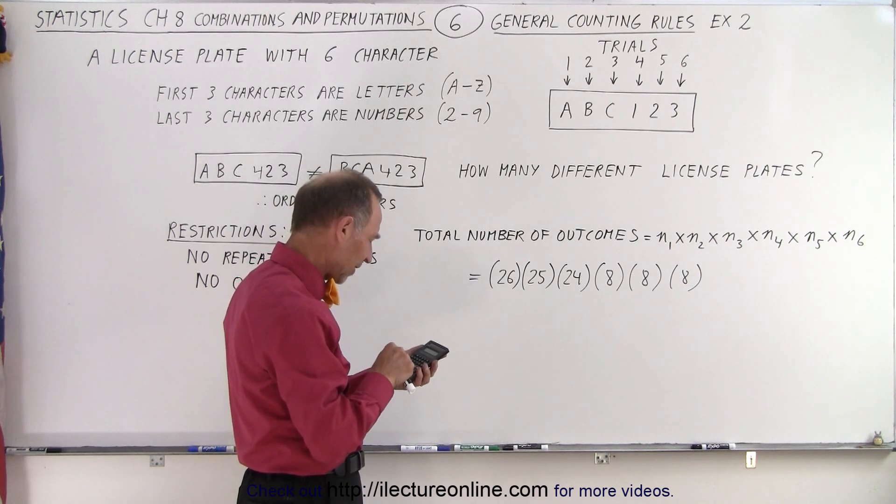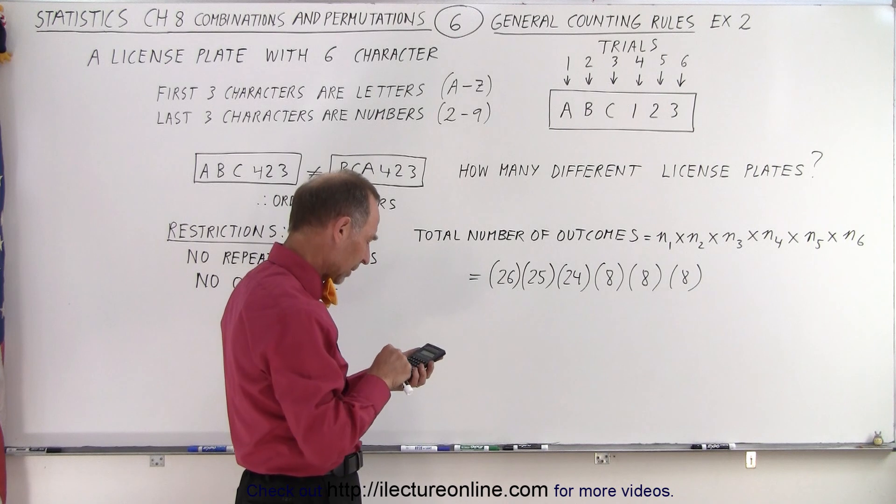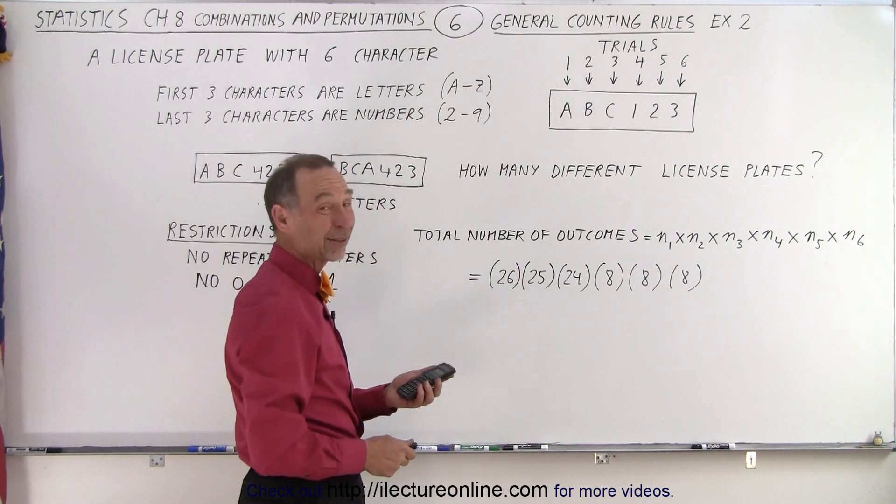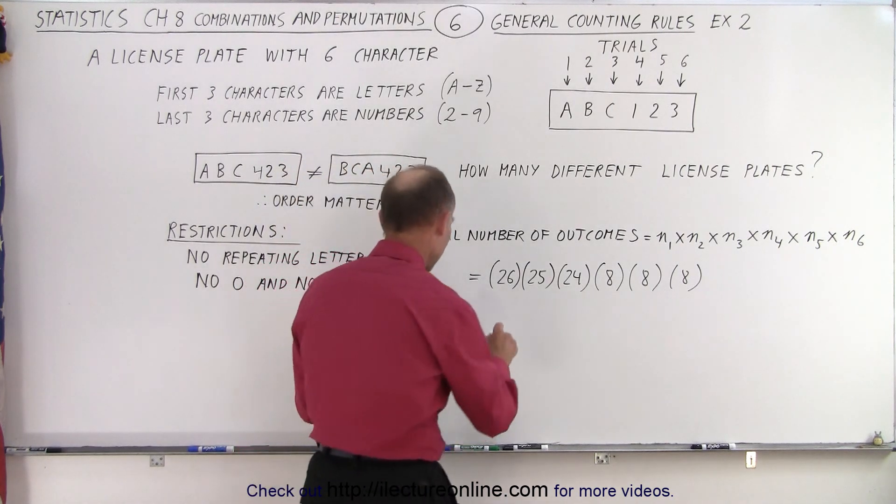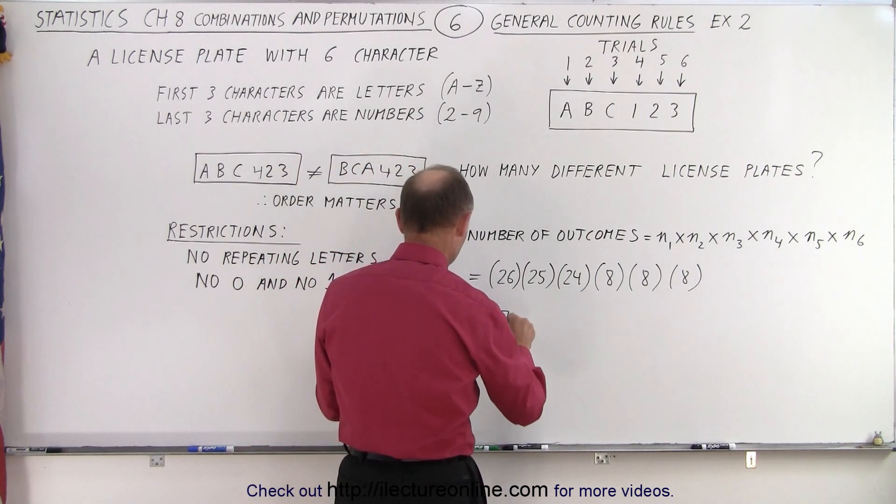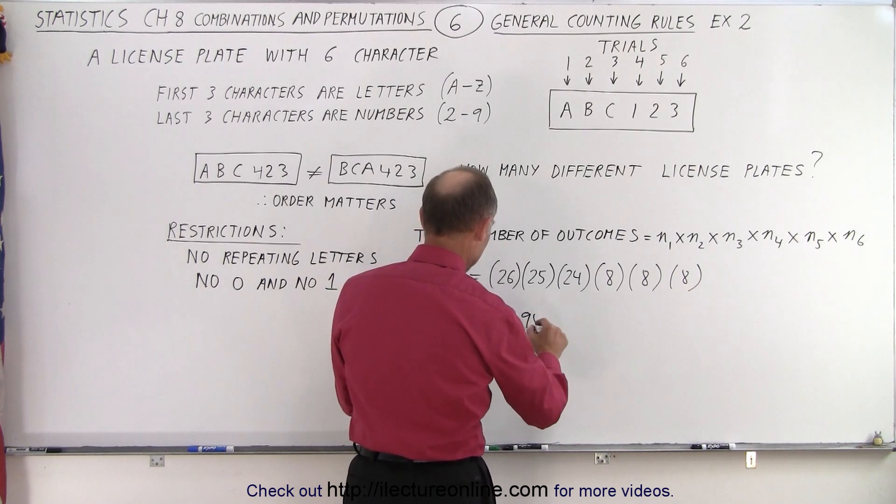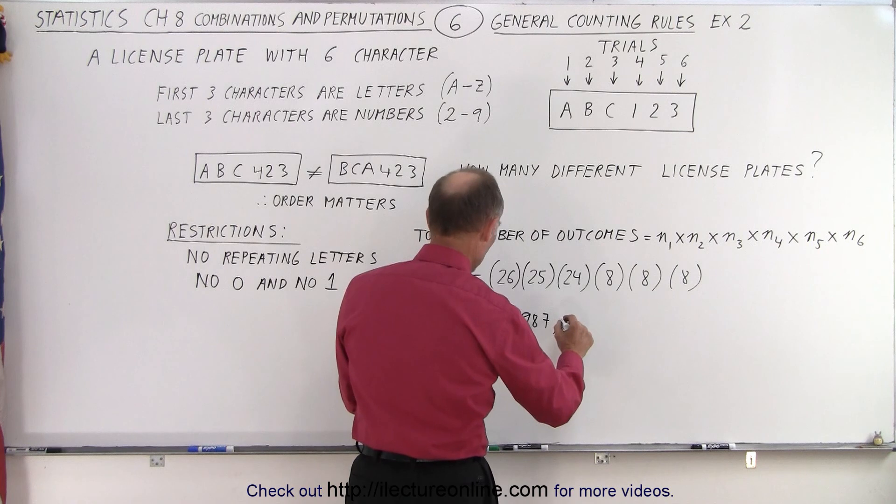So 26 times 25 times 24 times 8 times 8 times 8 equals, ah, that seems more like it. Okay, so now we have a total number of 7,987,200.